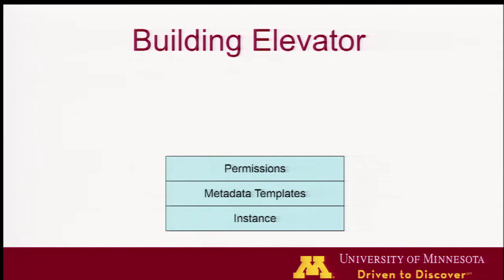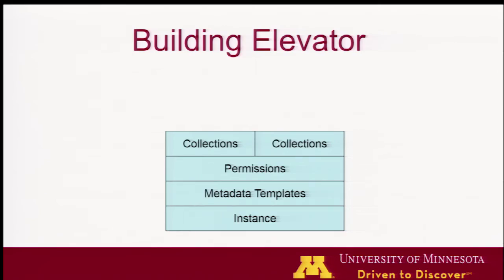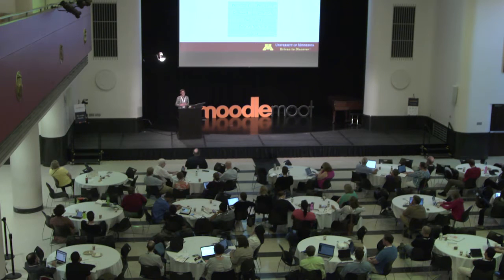On top of that we have permissions, because sometimes we want content available to everyone — and obviously that's amazing when we can do that — but sometimes we want things restricted to just a course, a unit, or a specific person. We can control things like: undergrads can come in and view content, but maybe we don't want them to download content. Or maybe we want some people to edit content and others to just pick and curate little collections. On top of that we build collections, which are like folders where you can group content together to share with a course. And then finally, we have more permissions — this collection is available to everyone, or this collection is available to no one. And our assets live on top of that.